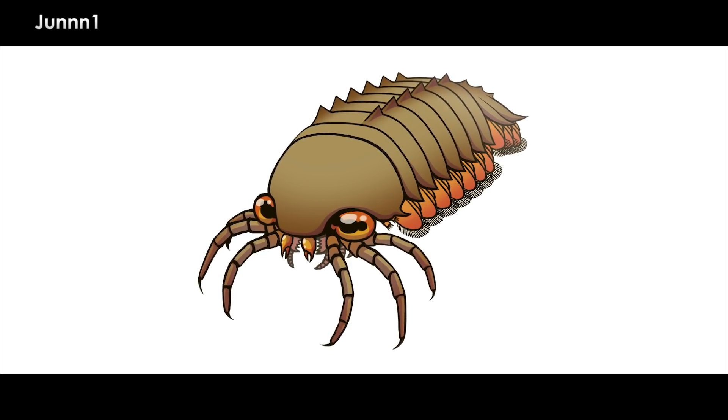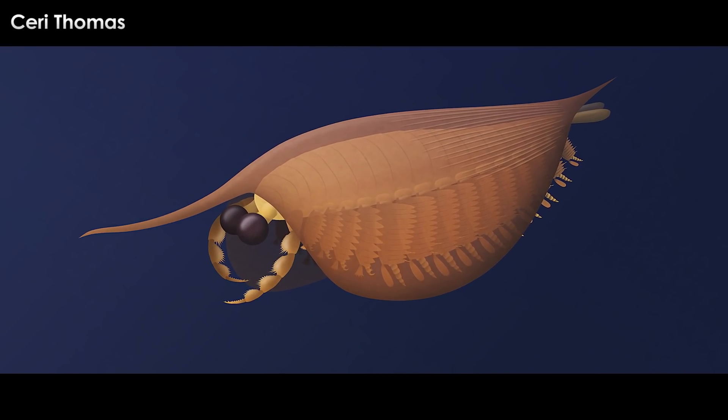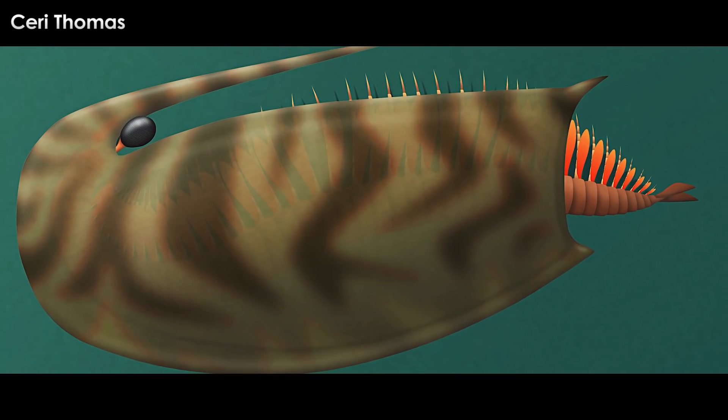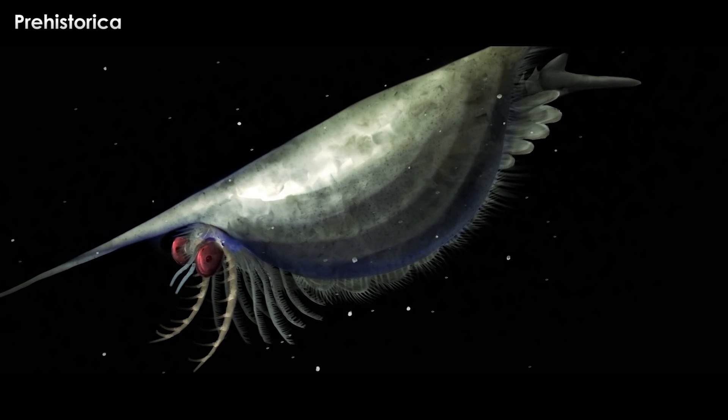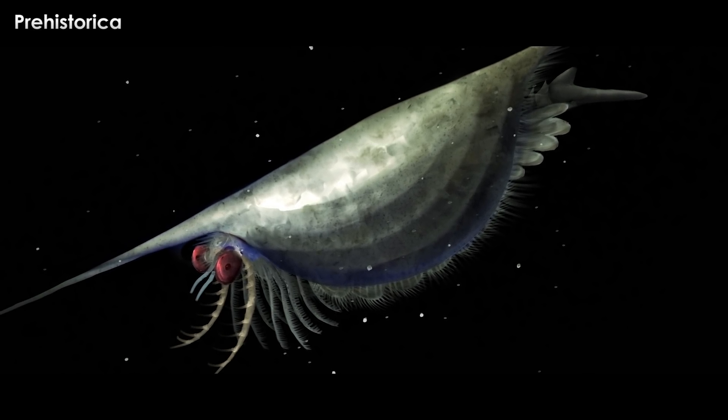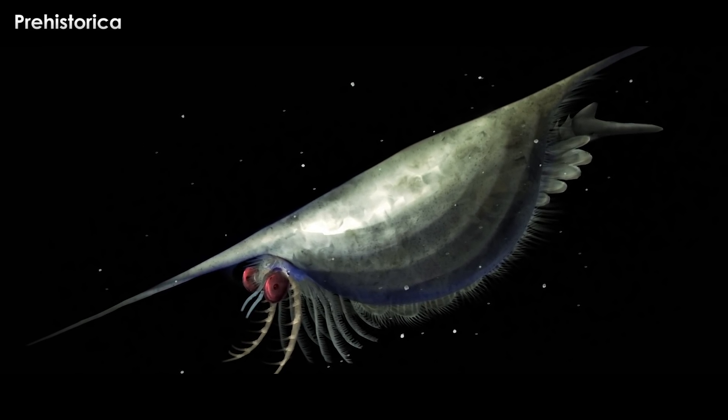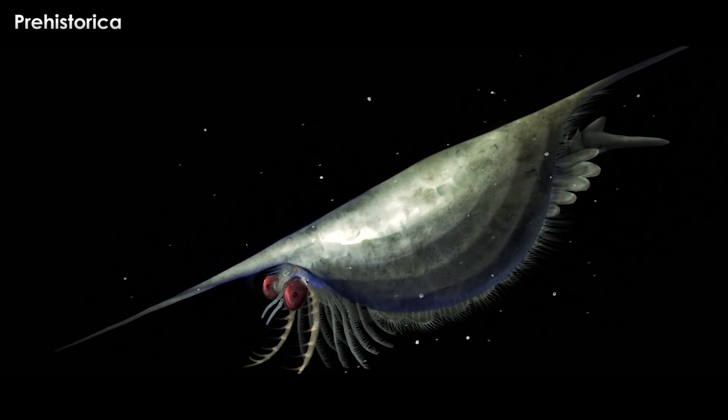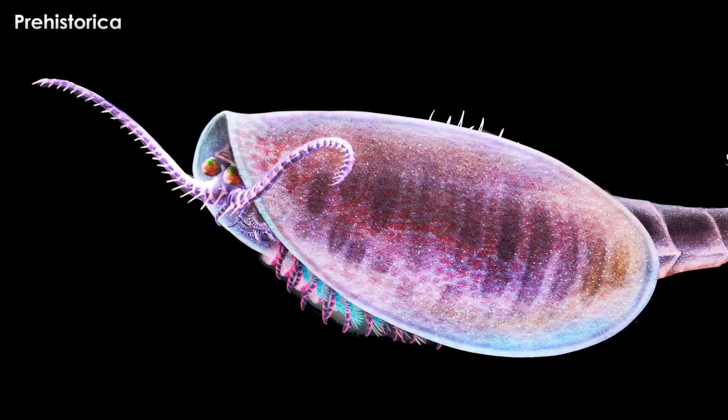In the Cambrian Burgess Shale sediments, there were the Stem Euarthropods, the Isoxyids, the Hymenocarina, and Stem Crustaceans. All of these bivalved arthropods show a wide range in anatomy outside of the shared double-shelled characteristic encompassing a huge range of ecological niches as well. There were scavengers, suspension feeders, and deposit feeders.